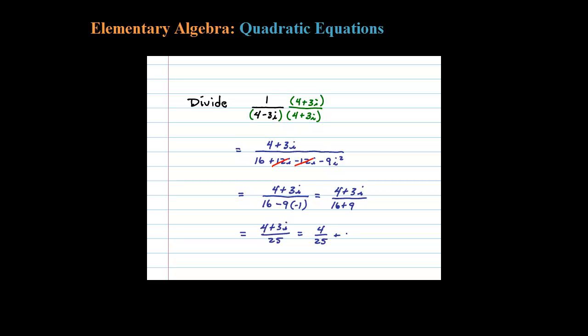And make it look like a standard complex number: 4 over 25 plus 3 over 25 i. A lot of times they want your complex numbers to look like a plus bi, so that's why they have you go the extra step.